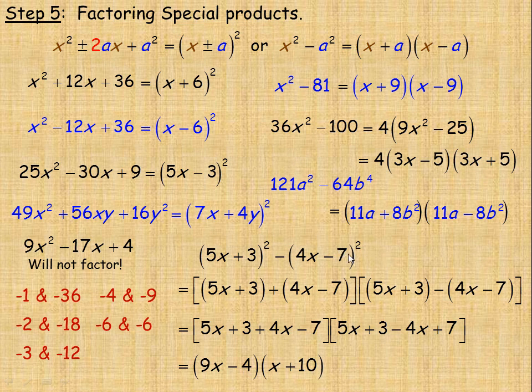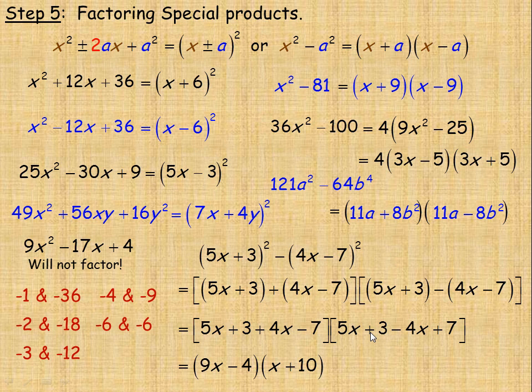Another way you could have done this is to expand everything out first to get a trinomial, then factor it just like in step 4 using ax squared plus bx plus c. That would have worked just fine — those are some strategies you can use for factoring.